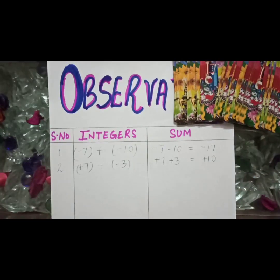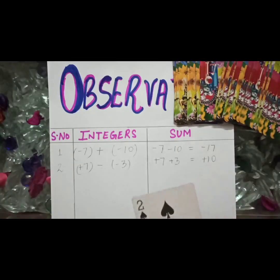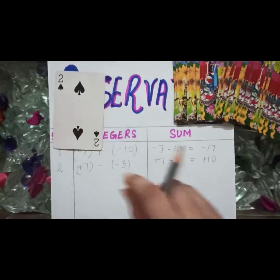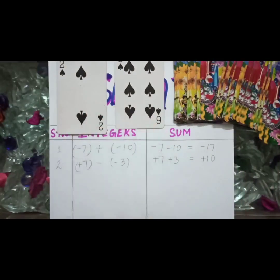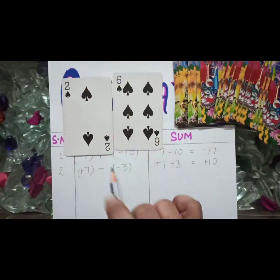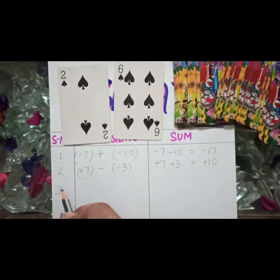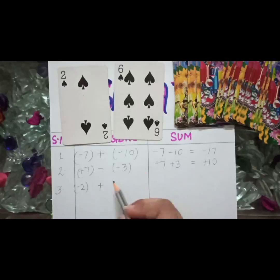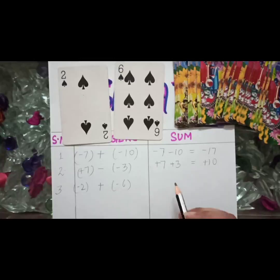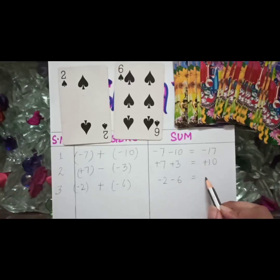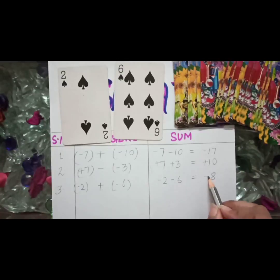Let's move on to the third one. I am choosing the next two cards — first card is 2, and my other card is 6. Both cards are of black color, so both will be the negative integers. The third question: 2 is minus 2, the question is of addition, and the other card is minus 6. So minus 2 plus minus 6 — plus minus equals minus — so minus 2 minus 6. After adding we get 8, and the sign of the greater number is minus, so the answer becomes minus 8.